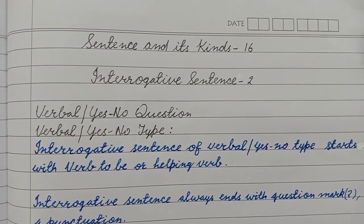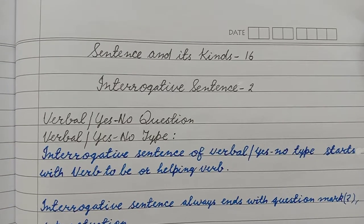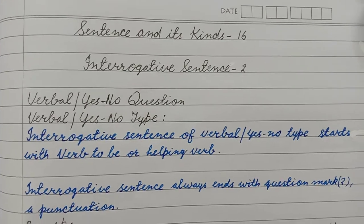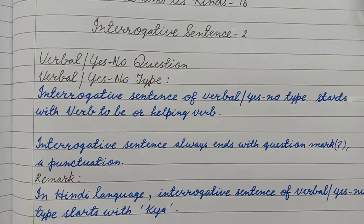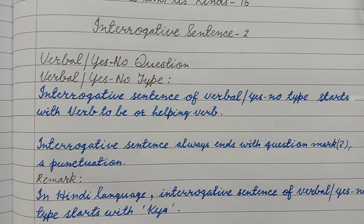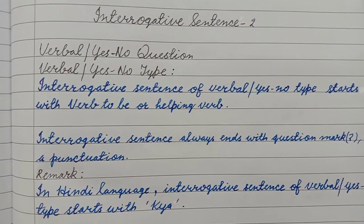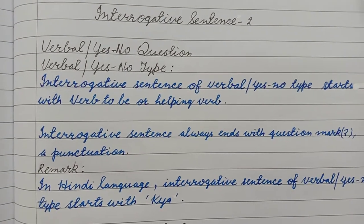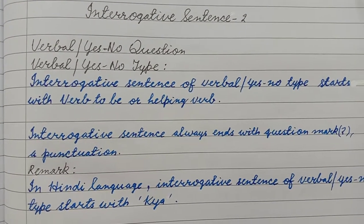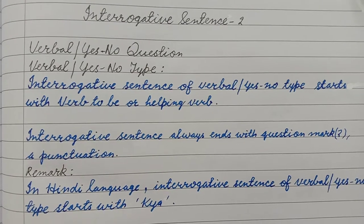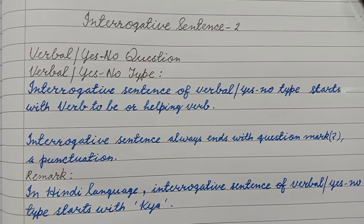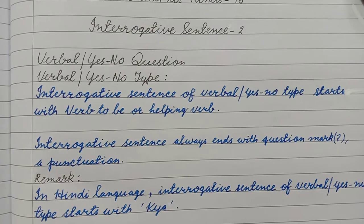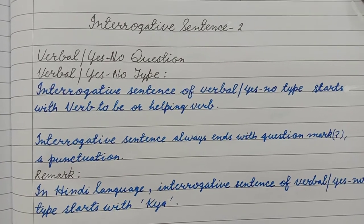Hello dear friends, we are in the series of sentence and its kinds. Today in interrogative sentence we will study verbal or yes-no question, verbal or yes-no type. Interrogative sentences whose beginning is from verb to be or helping verb — that is known as verbal or yes-no question, or verbal or yes-no type.